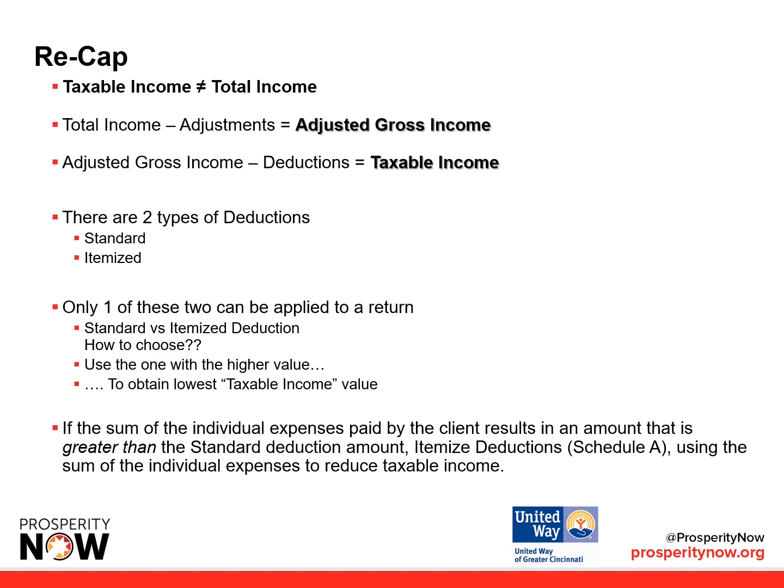To recap: taxable income is not total income. In order to calculate taxable income, you take total income minus adjustments to create the adjusted gross income. From there, you take the AGI subtracted by deductions, and that gives you the taxable income. There are two types of deductions — standard and itemized — but only one can be applied to the return. Simply use the one with the higher value to obtain the lowest taxable income. If the sum of the individual expenses paid by the client results in an amount greater than the standard deduction amount, itemizing deductions will reduce the taxable income burden.